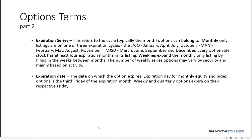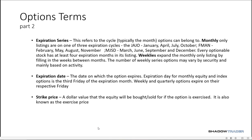The expiration date itself is the date at which the option totally ceases to exist. The expiration date for monthly equity and index options is the third Friday of the expiration month, called typically OPEX. Weekly and quarterly options are also out there on certain equities and ETFs, and they expire on their Friday. Strike price is the dollar value that the equity will be bought or sold if there is an exercise or an assignment. Strike price is also known as the exercise price.